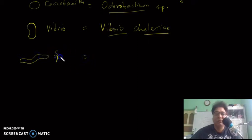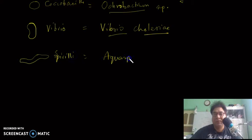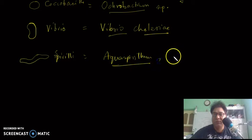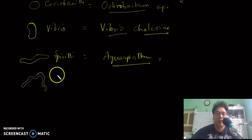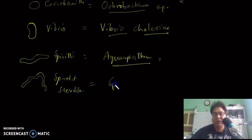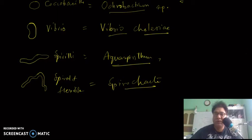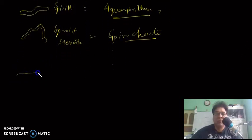The next shape is the spiral bacterium, called spirella. An example is Aquaspirillum magnetotacticum. There is another spiral bacteria that is flexible — spiral bacteria with flexibility. The example is Spirochaetes.